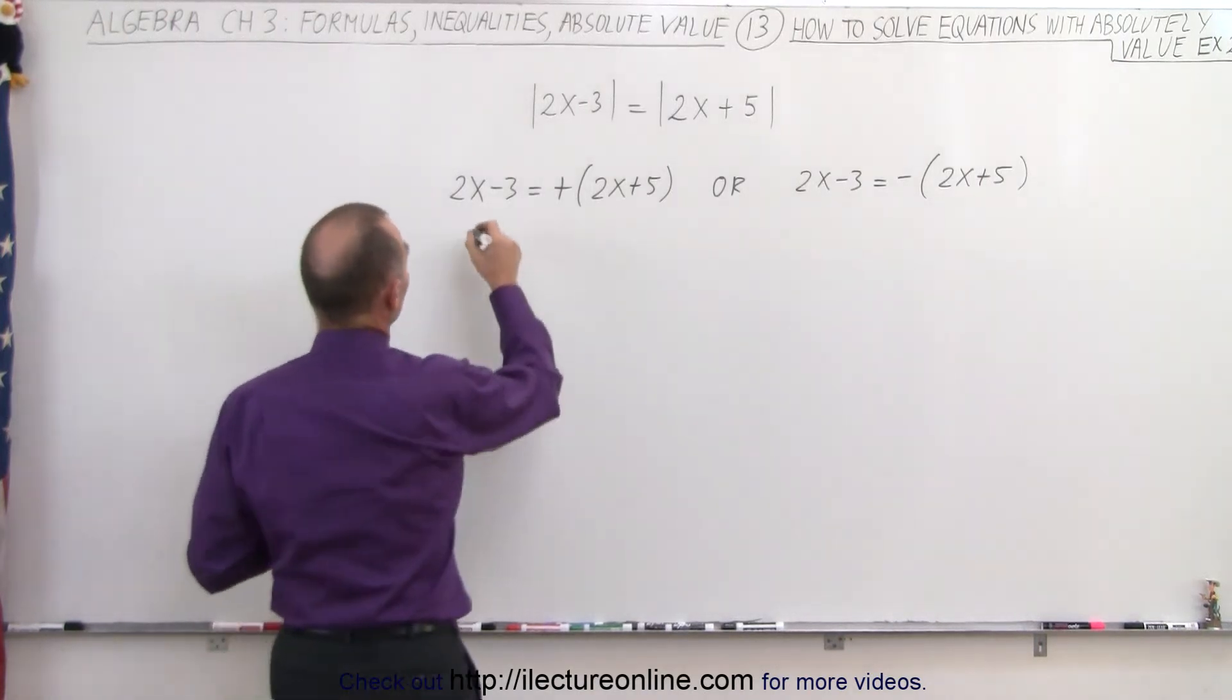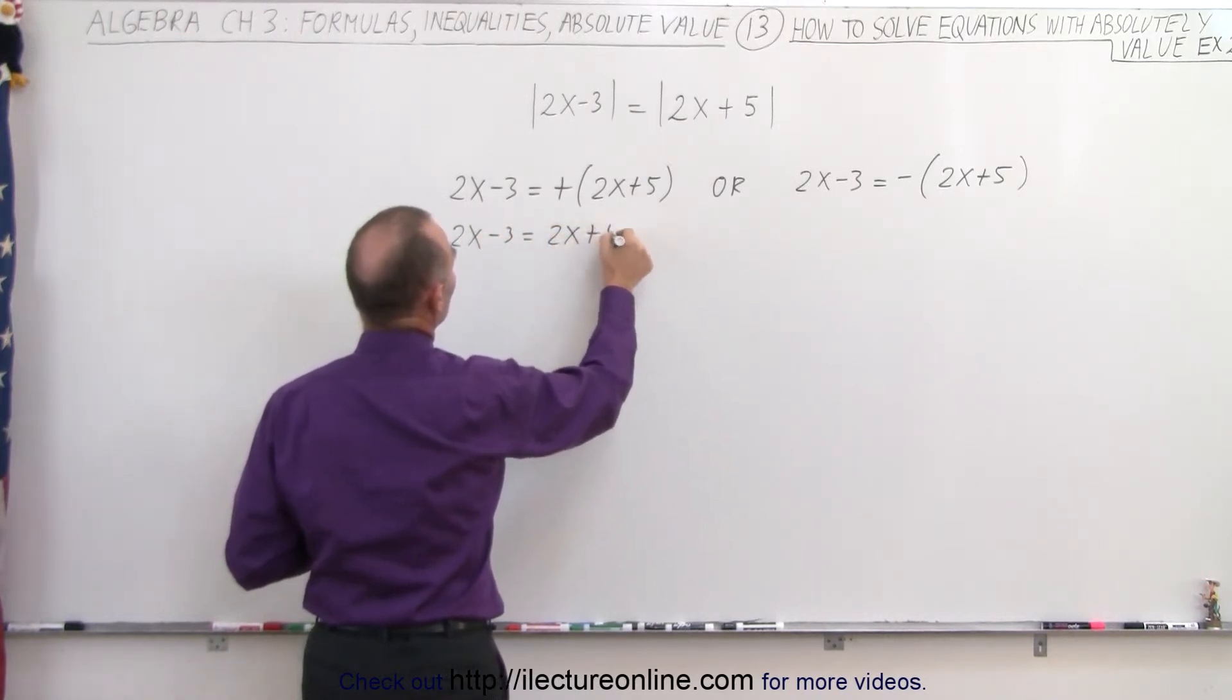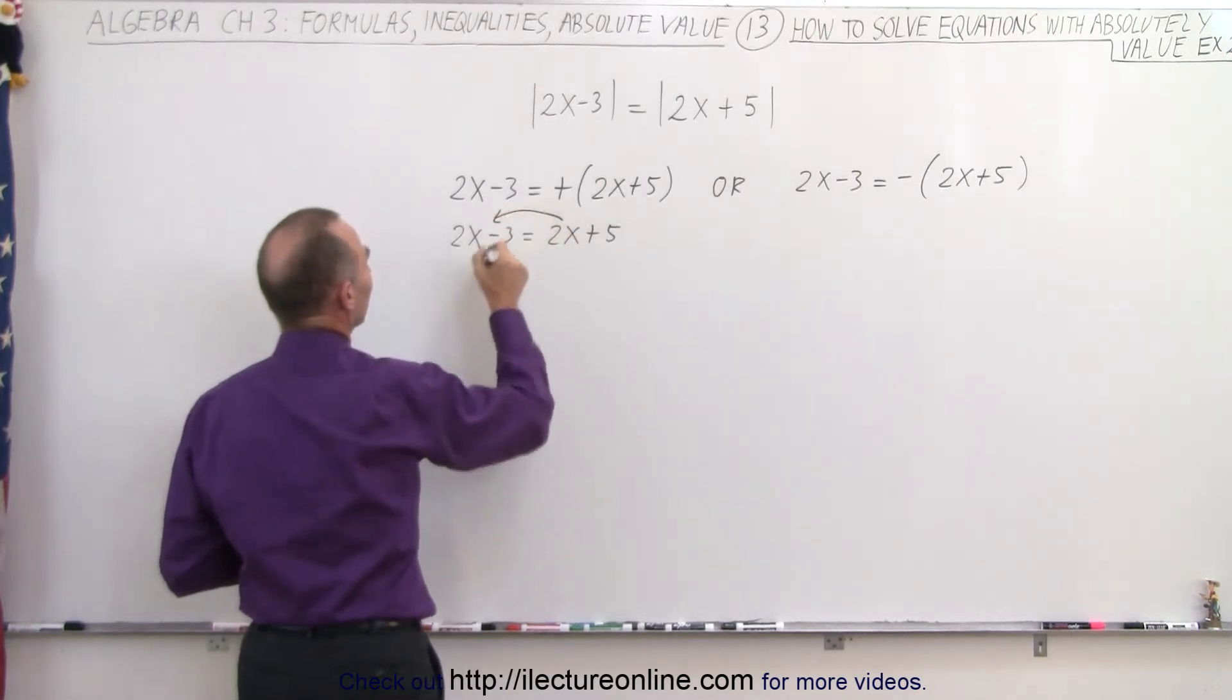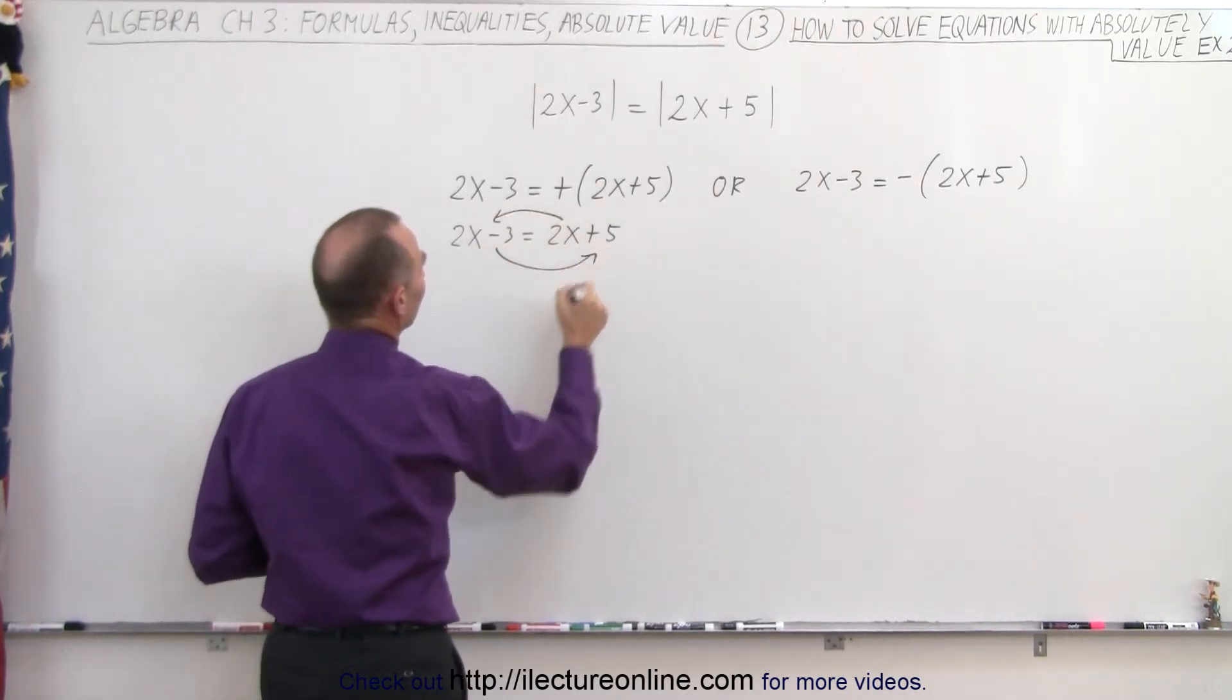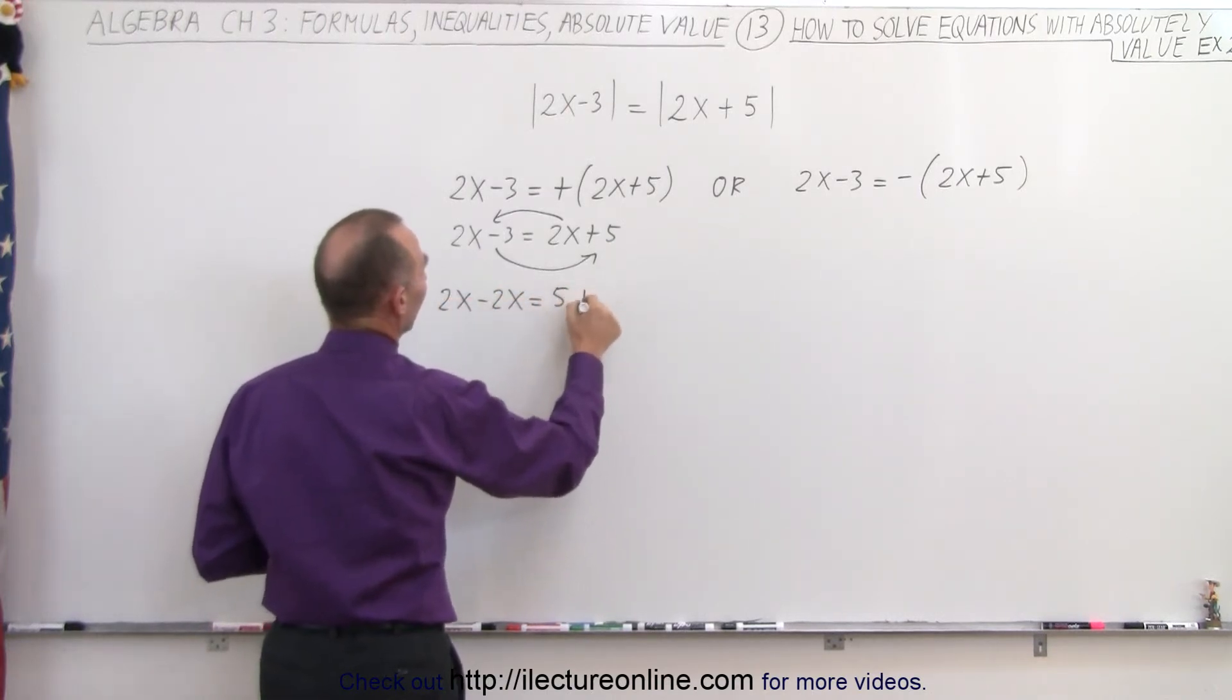So first, this becomes 2x minus 3 equals 2x plus 5. We can simply remove the parentheses. Then we move all the terms that have an x to one side and everything else to the other. So here we end up with 2x minus 2x equals 5 plus 3,